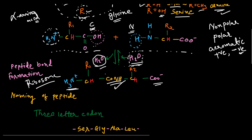When writing the sequence of amino acids, it is written from the N terminal to the C terminal of the protein sequence. There are different ways to write the amino acid sequence.